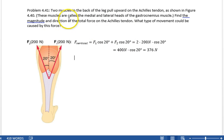That's the total vertical force on the Achilles tendon. And remember, the horizontal force, let's just put it here formally, the horizontal equals F1 sine 20 minus F2 sine 20 equals 0. No horizontal force, vertical force is 376 newtons.